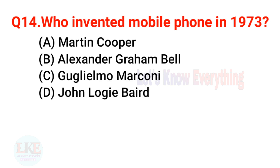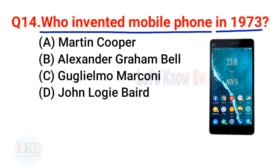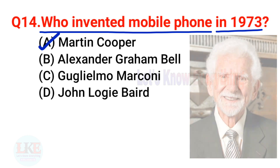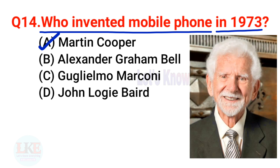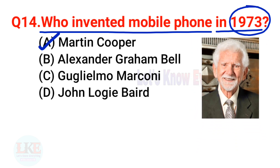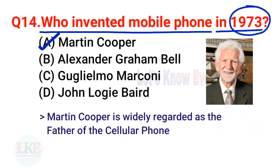Question 14: Who invented the mobile phone in 1973? A) Martin Cooper, B) Alexander Graham Bell, C) Guglielmo Marconi, D) John Logie Baird. The right answer is option A, Martin Cooper. American engineer Martin Cooper first invented the mobile phone or cell phone in 1973. Because of this, Martin Cooper is widely regarded as the father of the cellular phone.